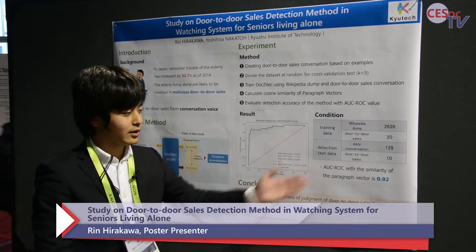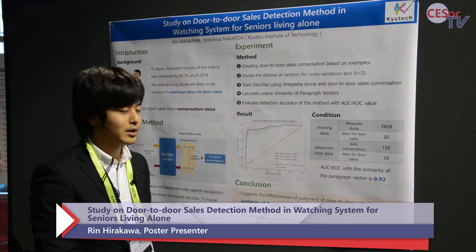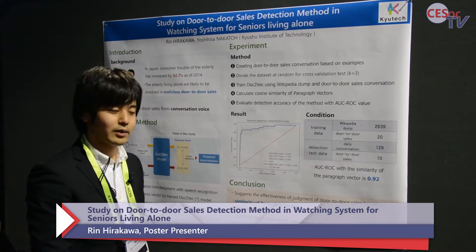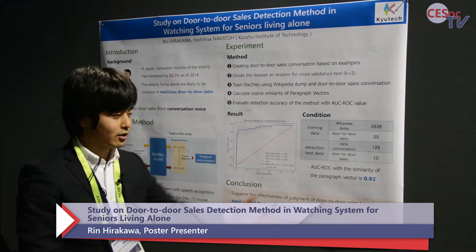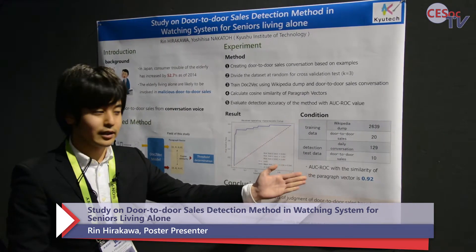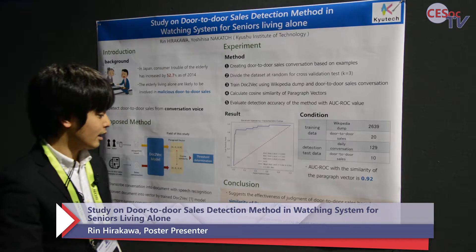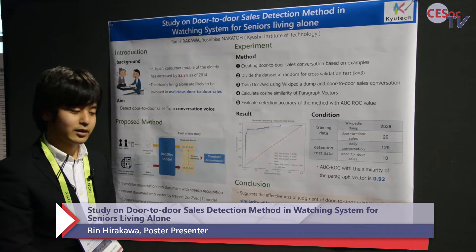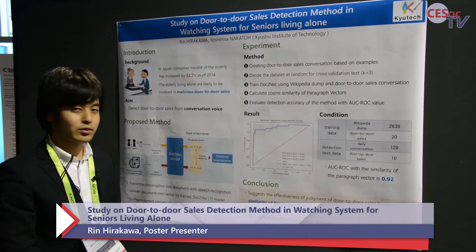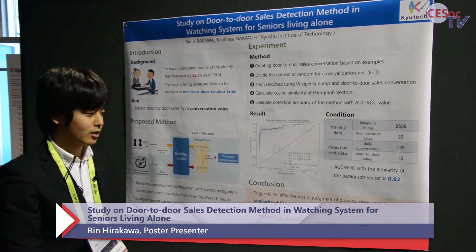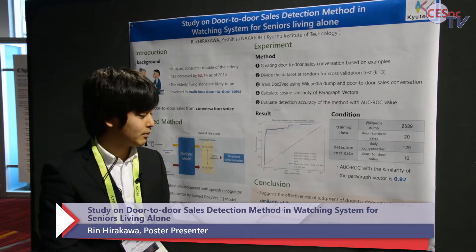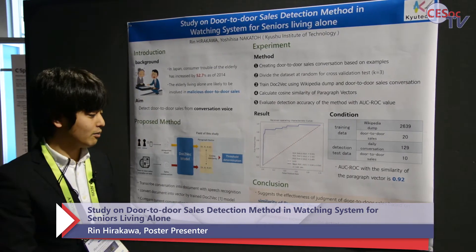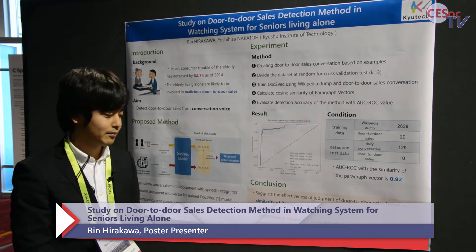the AUC-ROC with the similarity of the paragraph vector is 0.92. It suggests the effectiveness of judgment of door-to-door sales based on similarity of paragraph vector.